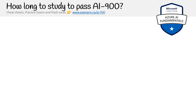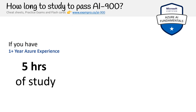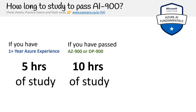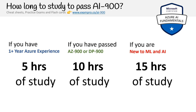How long should you study to pass the AI-900? If you have one year of experience with Azure, you're looking at as little as five to ten hours. If you've passed the AZ-900 and DP-900, around ten hours is the average. If you're completely new to ML and AI, you're looking at fifteen hours, which could extend to twenty or thirty hours.